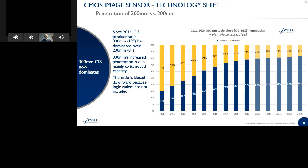I mentioned the 12-inch equivalents. There is a market mix between 8-inch and 12-inch — 300-millimeter and 200-millimeter. Right now, the CIS industry is bringing more capacity in 12-inch, but there is also an interesting market for 8-inch. In terms of revenue and volume, it is increasing, so there is added capacity in 8-inch too.